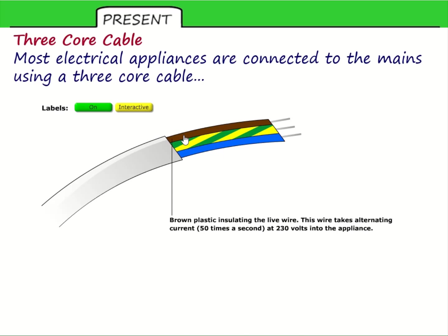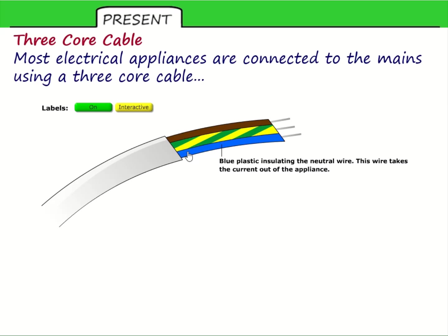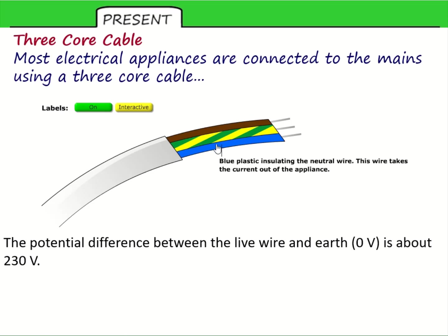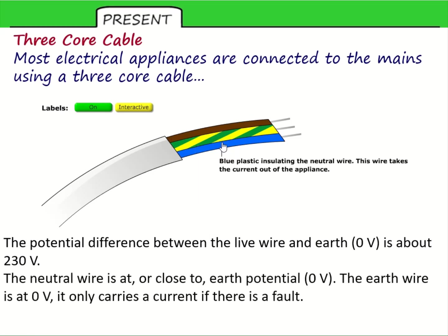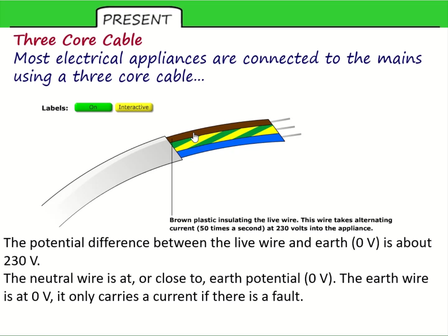To summarize the wires: brown for live, green and yellow for earth, and blue for neutral. In terms of voltages, the live wire is usually at around 230 volts — in the exam answer say 230. The neutral wire is at zero volts. The earth is also at zero volts, but the key thing is it only carries current if there's a fault. Most of the time there's no current going through that wire; there is through the live and the neutral.